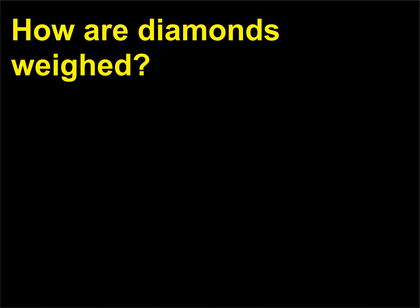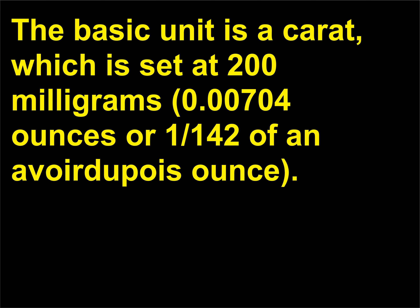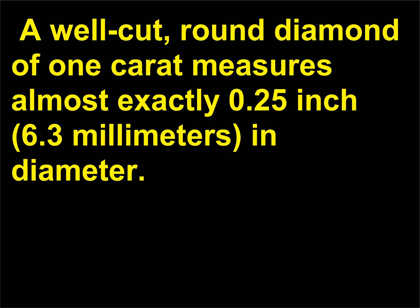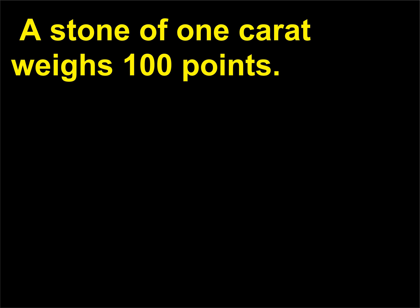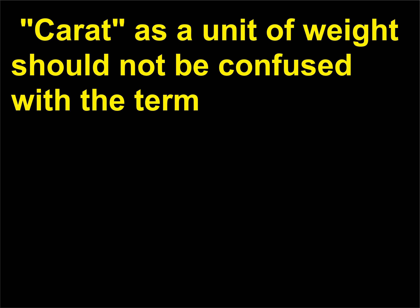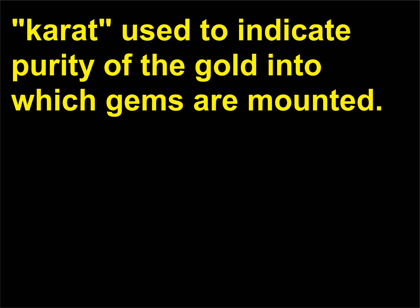How are diamonds weighed? The basic unit is a carat, set at 200 milligrams (0.00704 ounces or 1/142 of an avoirdupois ounce). A well-cut, round diamond of one carat measures almost exactly 0.25 inch (6.3 mm) in diameter. Another unit commonly used is the point, which is one hundredth of a carat; a stone of one carat weighs 100 points. Carat as a unit of weight should not be confused with the term karat used to indicate purity of gold into which gems are mounted.